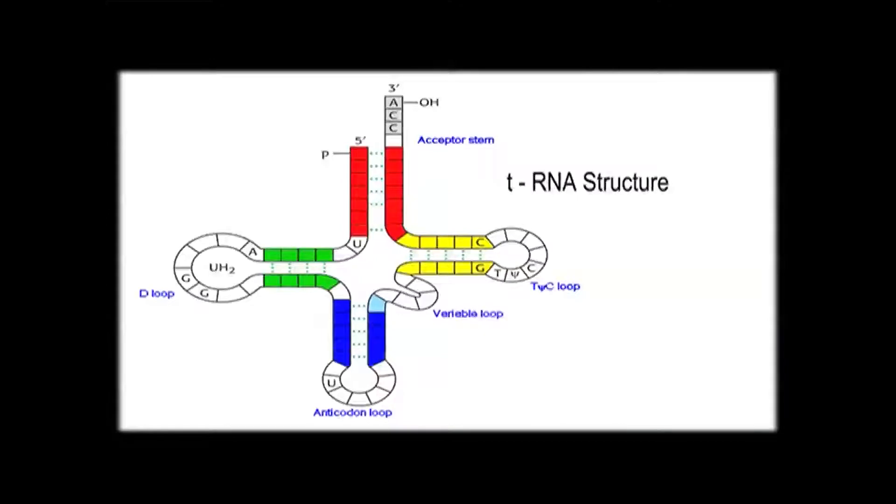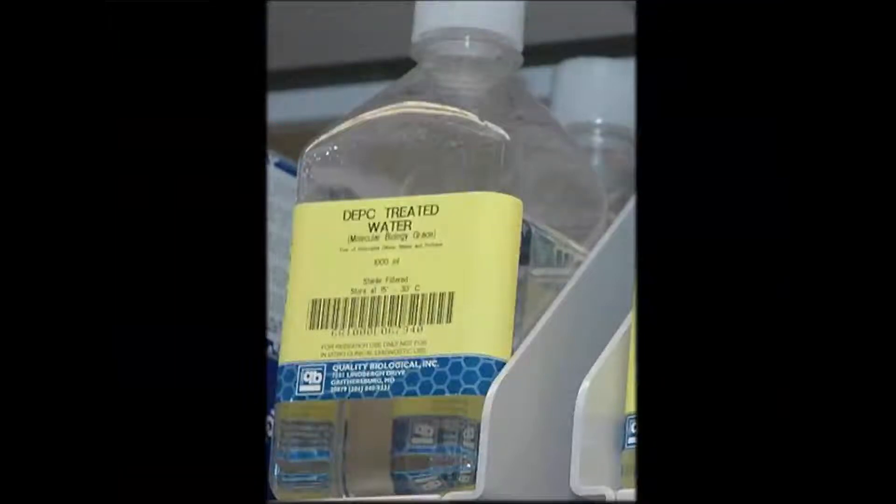Before going into the detailing of RNA quantification, you have to have the idea about the source and extraction method of RNA. As RNA is unanimously present in all living organisms, you can choose any one of the biological sources for RNA extraction. You have to remember about RNase contamination, because our hands are also contaminated with RNase, so to avoid RNase contamination you have to use diethylpyrocarbonate or DEPC-treated water.